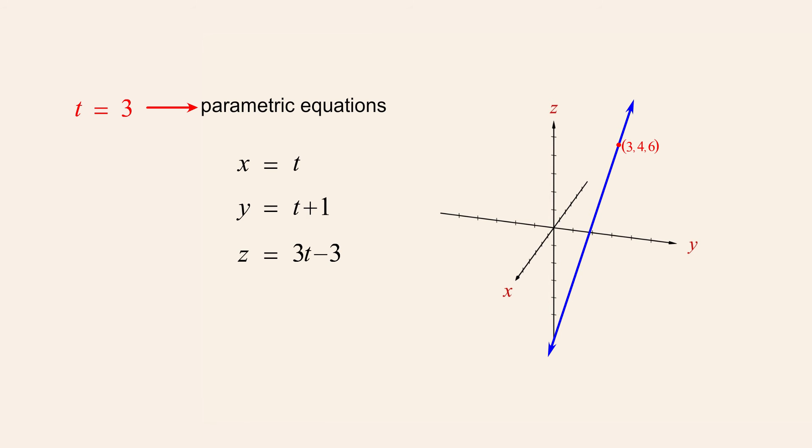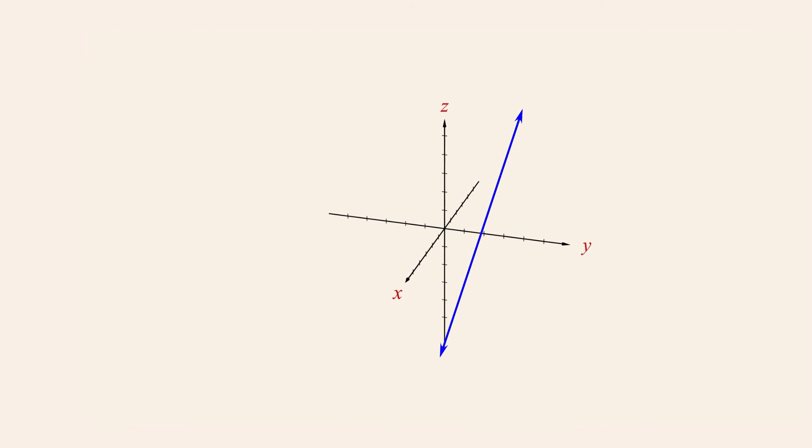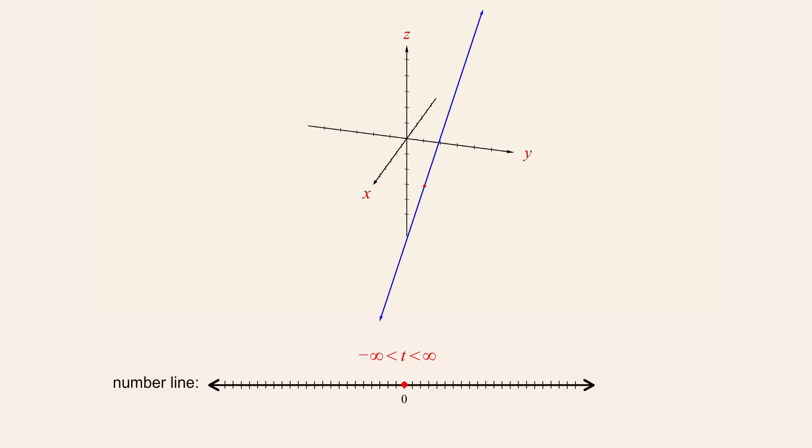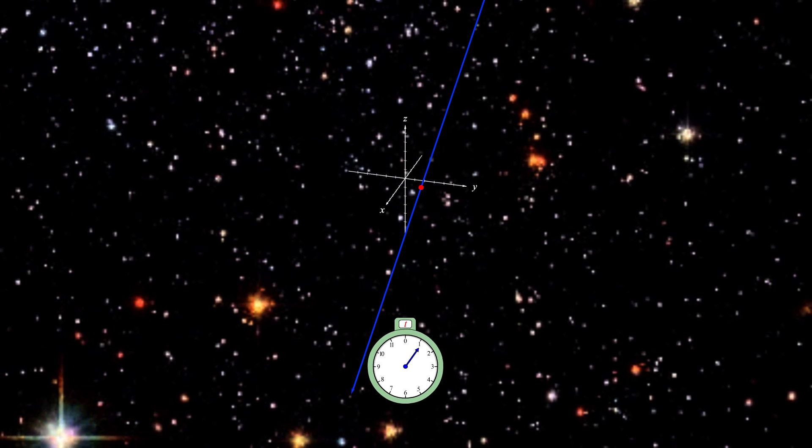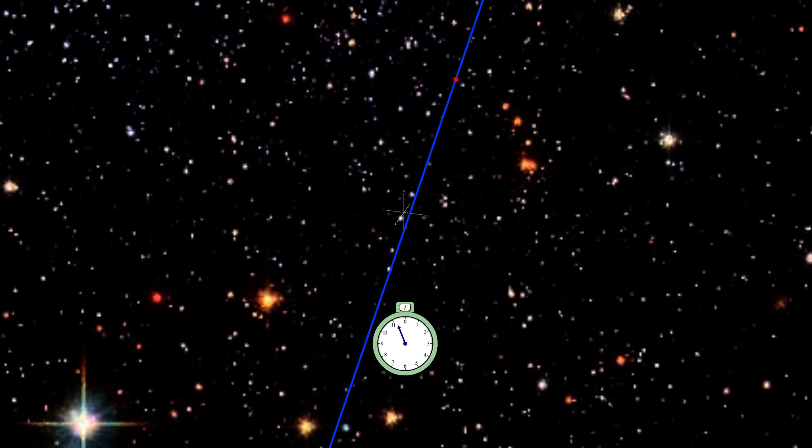In a parametric equation, the parameter varies freely over some defined range of values. Since in this example, the line representing the solution set extends infinitely in both directions, the parameter t must vary over all real numbers. If we think of t as representing time, then we can think of the line as the path of a point whose position in space is a function of time. Perhaps this is why the letter t is often chosen as a parameter name.